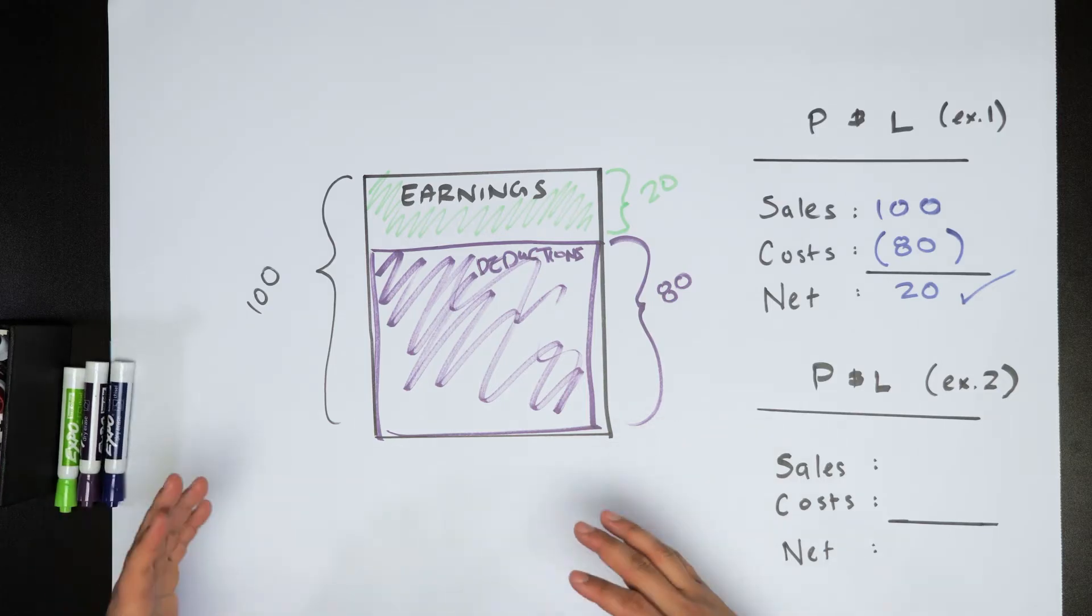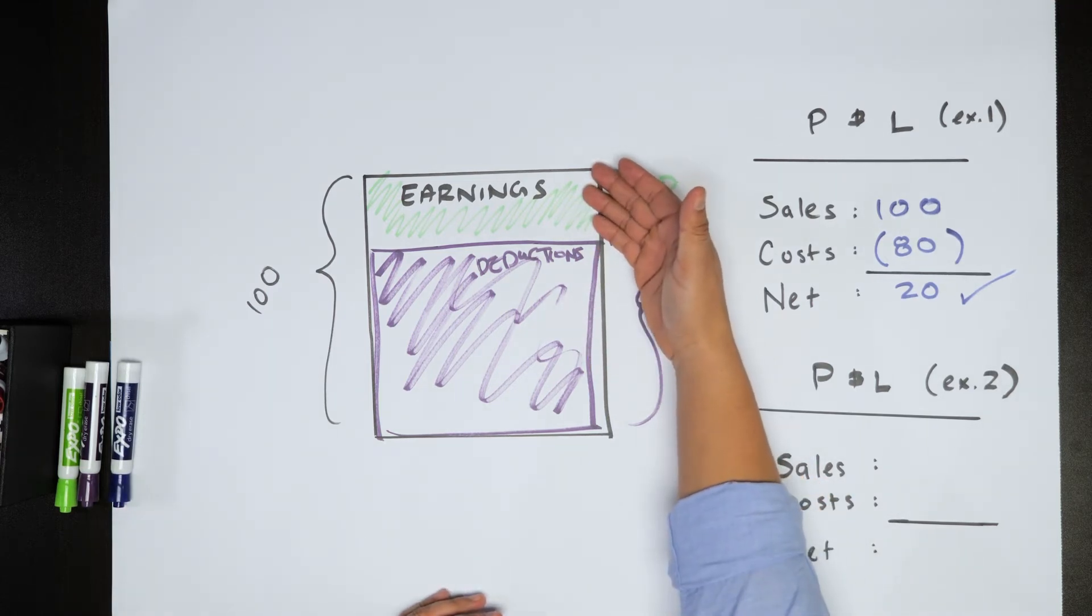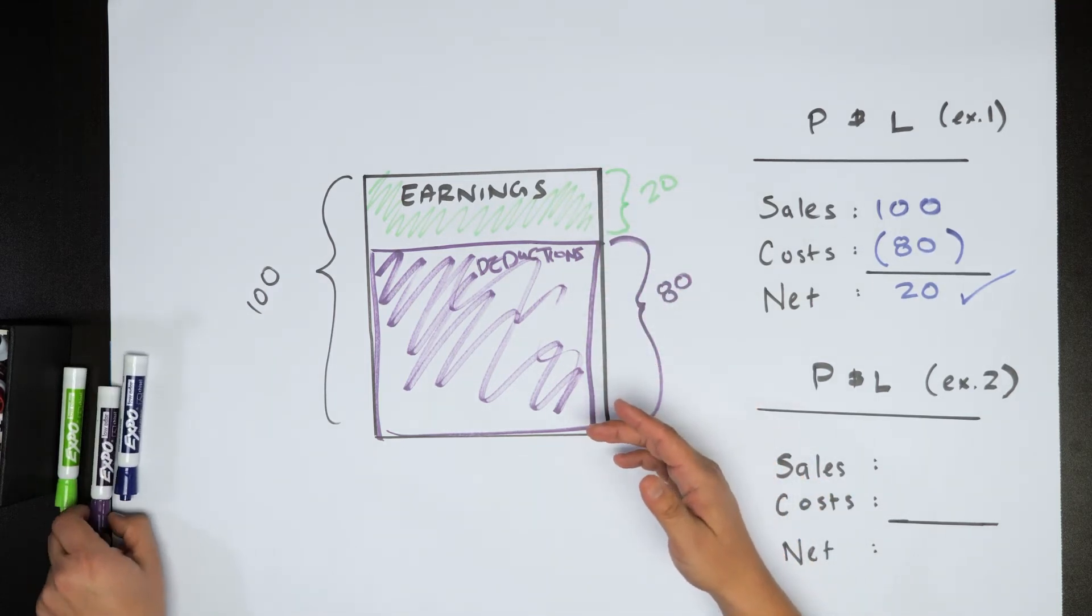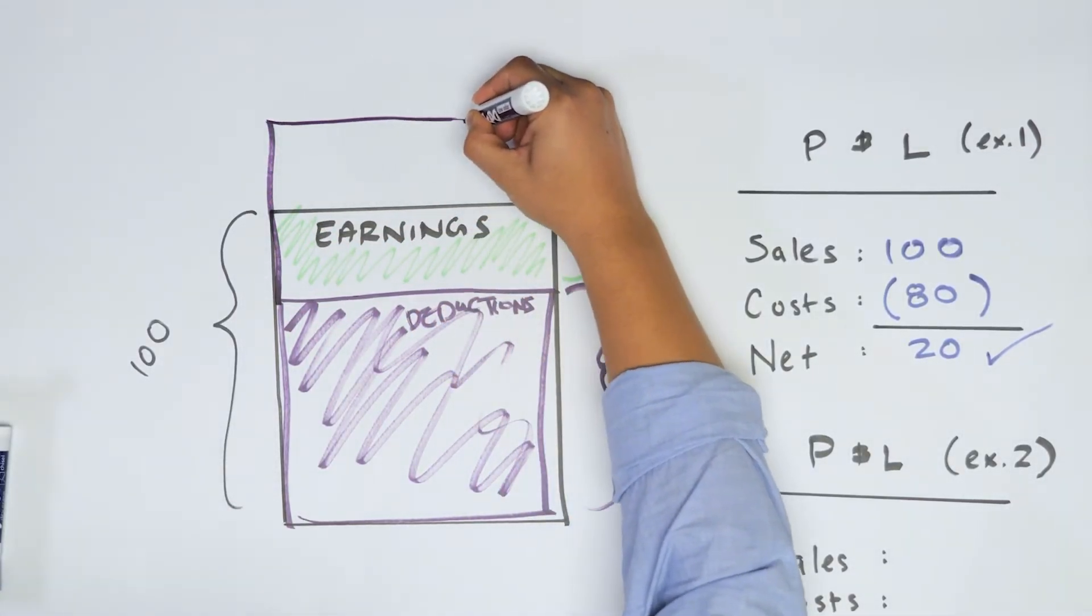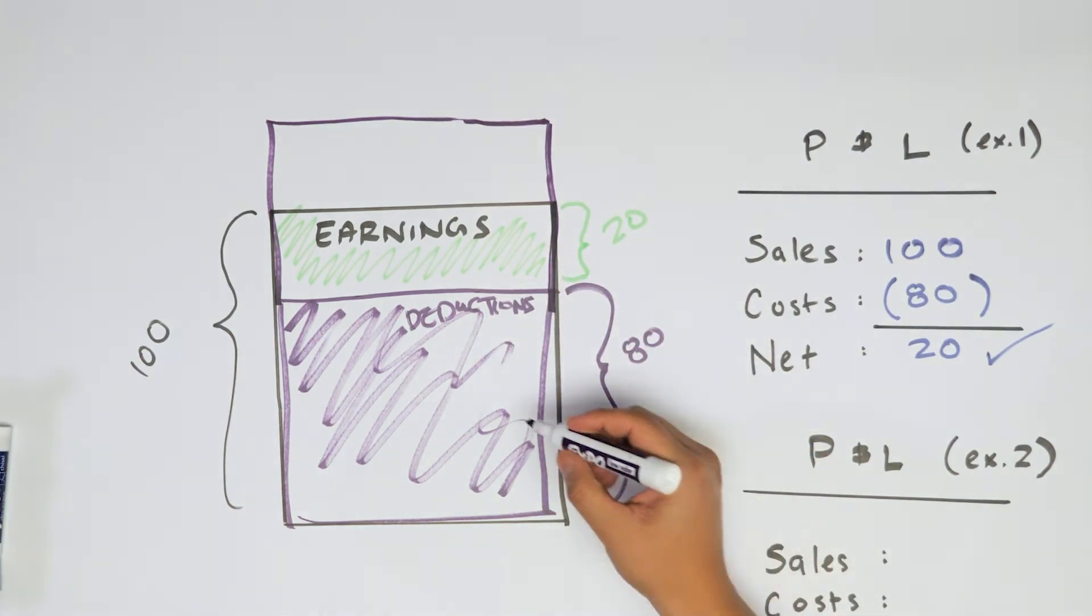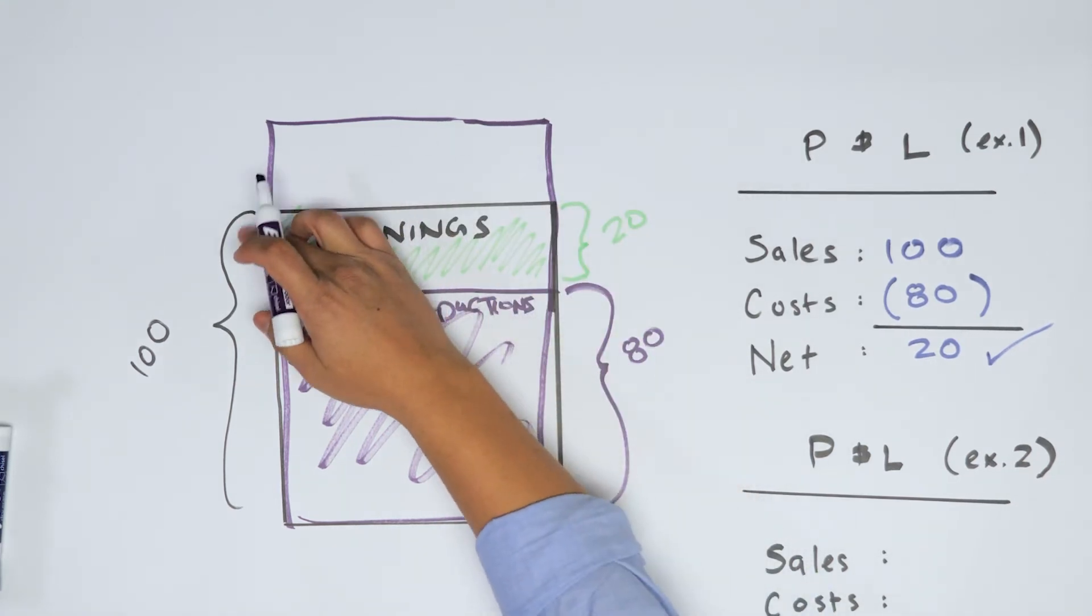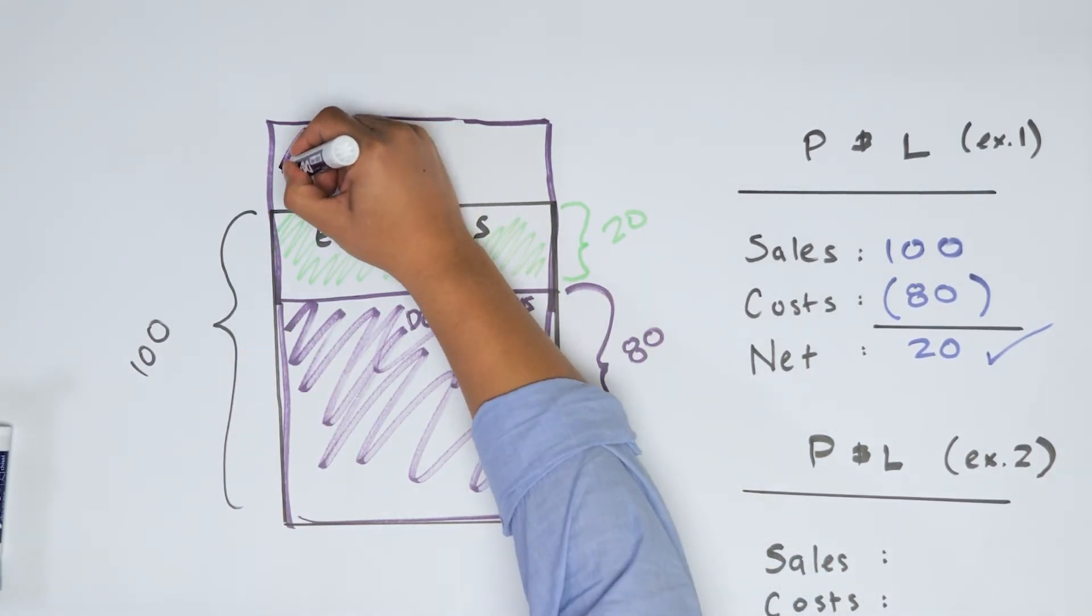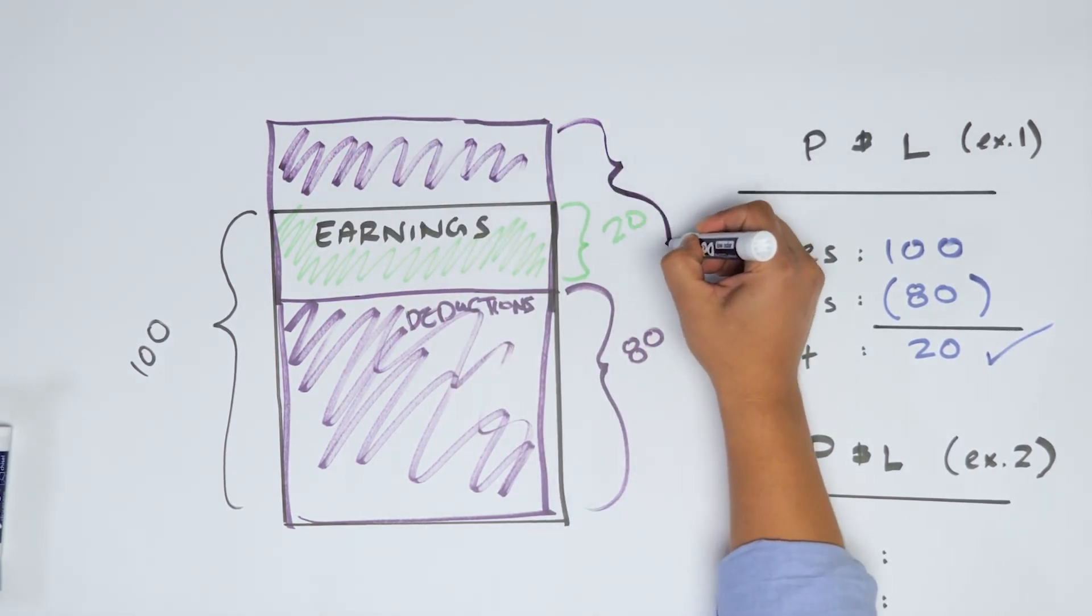So oftentimes when we start a business, our deductions are going to exceed our earnings. And I want to demonstrate what that might look like. So let's take an example where our deductions do in fact exceed what we earned that year. And this is not uncommon for a business. So in this case, these are still our earnings. From here to here, we still have the hundred in earnings, but now we have deductions of, let's say 120.